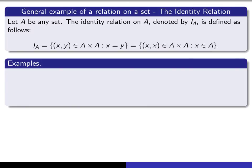Let's look at a couple of examples of that. Here are two sets A. If A is given by this set, then what is the identity relation? It's the set of all things of this form.